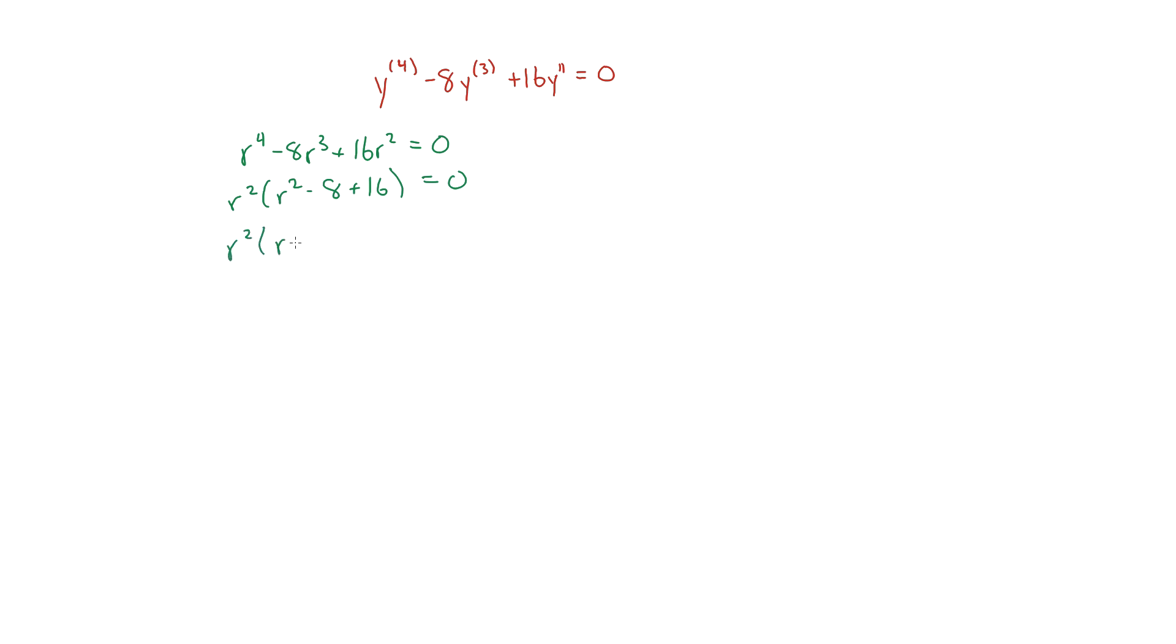This is going to be r squared times r minus 4 times r minus 4, and I'm going to rewrite this again to show you that there's four different solutions to this algebraic expression.